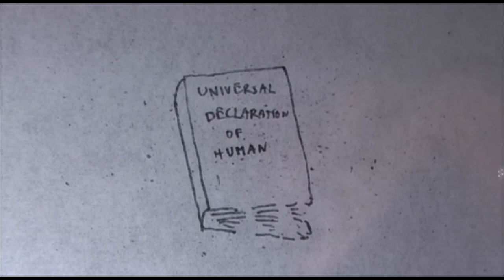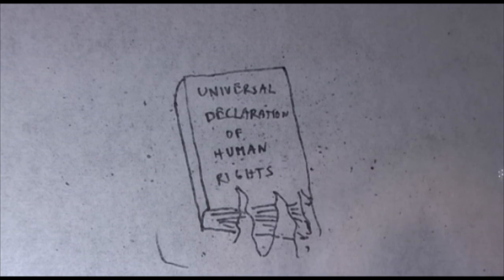The Universal Declaration of Human Rights describes the family as the natural and fundamental unit of society. It follows that any choice and decision with regard to the size of the family must irrevocably rest with the family itself and cannot be made by anyone else.